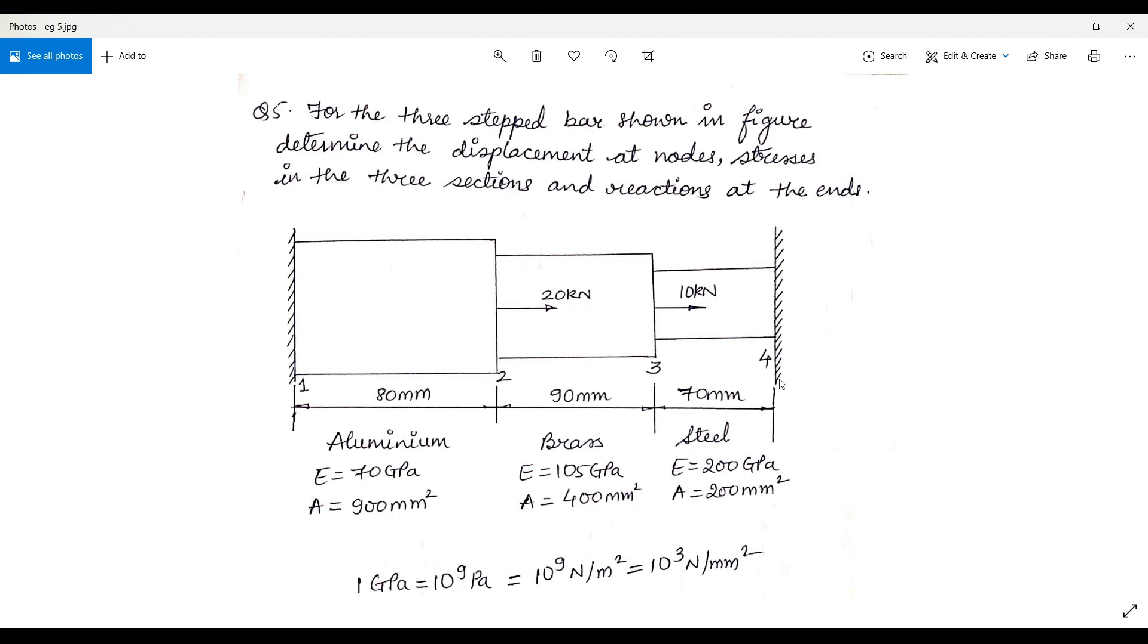There are some conditions like if there is a change in material from one to another, a node has to be marked. Also if there is a sudden loading coming into picture, you need to mark a node. So there are four conditions under which a node has to be marked in FEA method: at the two end points, where there is a change in geometry, where there is a change in material, and where there is a sudden loading coming into picture.